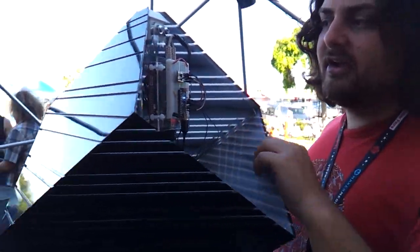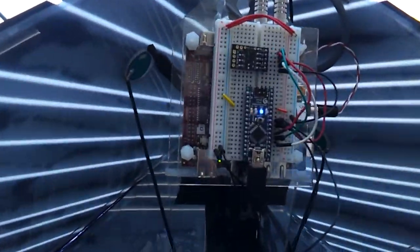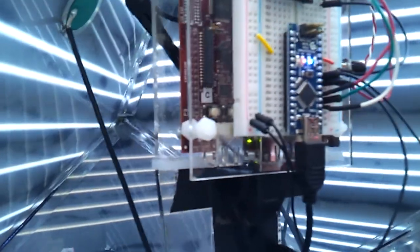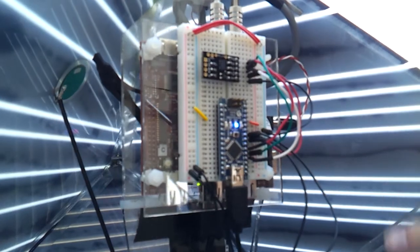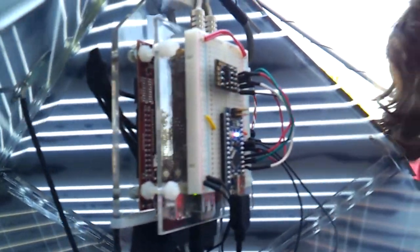We also have an accelerometer in there that we're using to get that displacement angle. This is a nano. That's getting the information from the Arduino and sending that to the BeagleBoard. And it's also controlling a BlinkM using I2C.